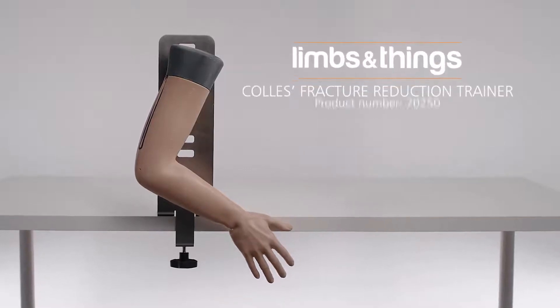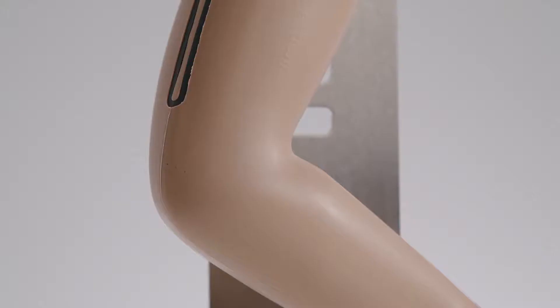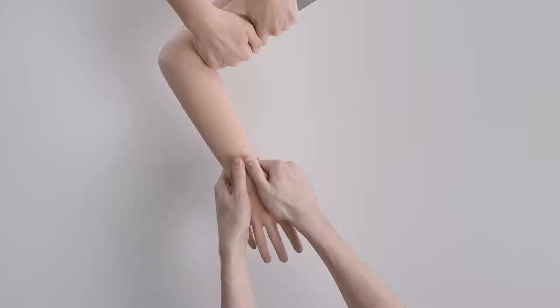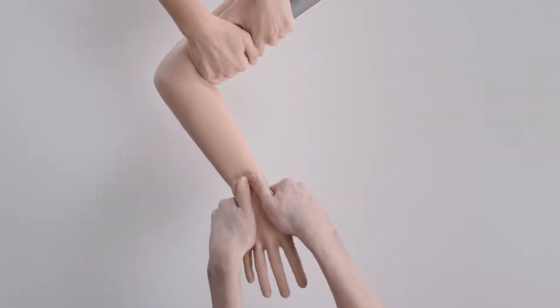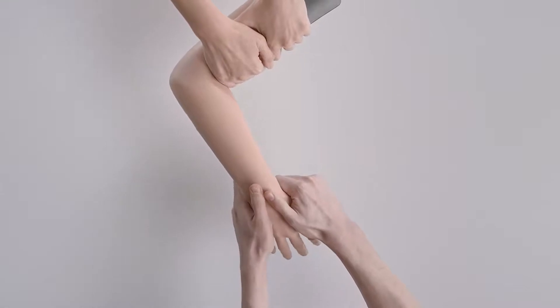This is the Limbs and Things Colley's Fracture Reduction Trainer, an anatomically accurate arm which supports trainees to gain confidence associated with successful management of Colley's fracture.